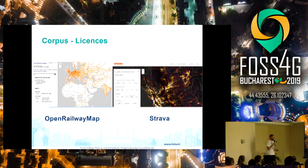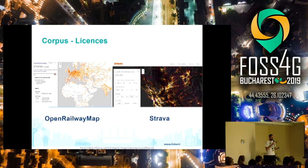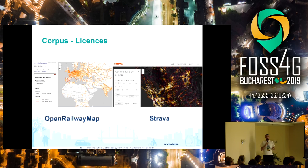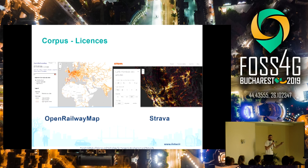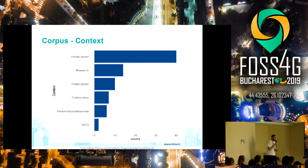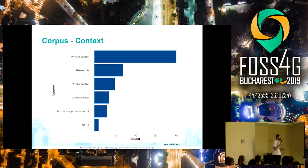An example I can show you is Open Highway Map, which is a map from OpenStreetMap data on highway data — collaborative and open source. On the other side we have Strava, which is a proprietary application to visualize athlete routes — runners and such. We collected data and took snapshots of these applications. The context where these applications are developed is often the private sector, by private companies.